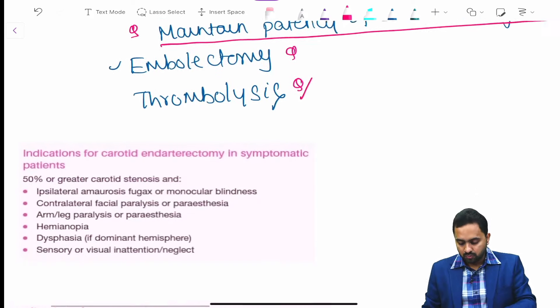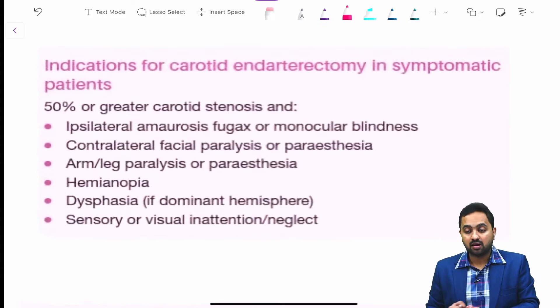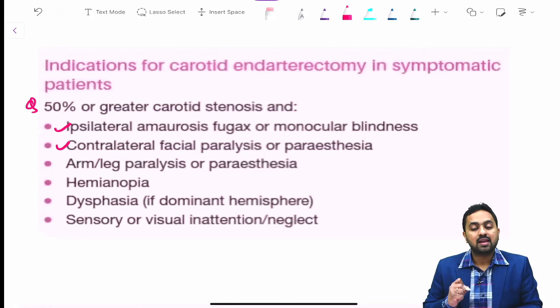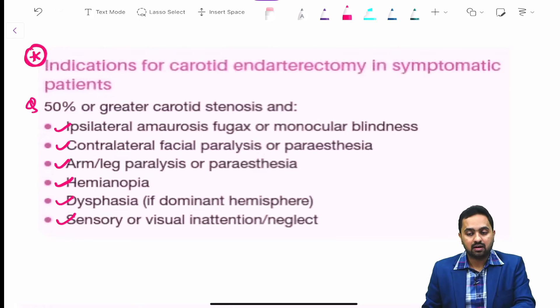We end with two important tables. Indications for carotid endarterectomy in symptomatic patients: 50% or greater carotid stenosis and ipsilateral amaurosis fugax or monocular blindness, contralateral facial paralysis or paresthesia, arm or leg paralysis or paresthesia, hemianopia, dysphagia, and sensory or visual inattention or neglect.